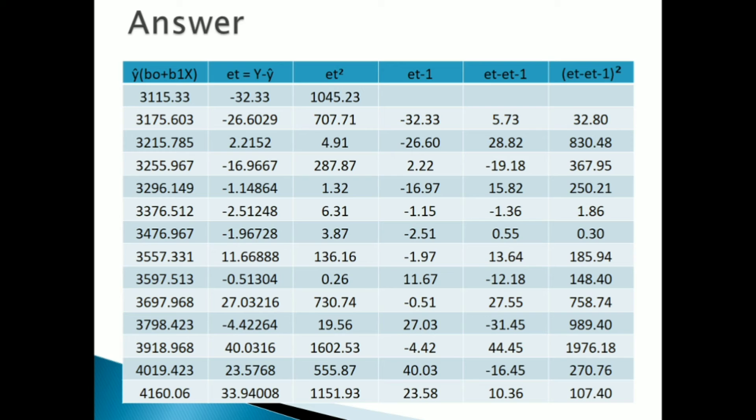Your third column shows ET squared. It is nothing but you just squared the second column. Squared ET means you can get the third column value, ET the whole squared.